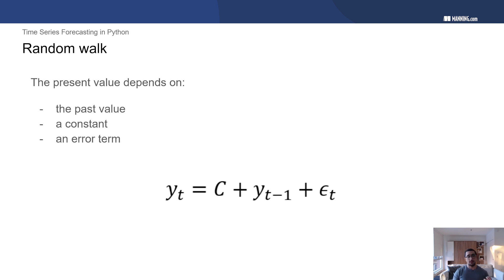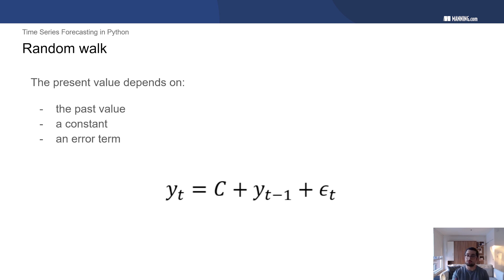Mathematically, we say that in a random walk, the present value y_t depends on a constant c, the past value of the time series y_{t-1} — just the value one step before — and an error term epsilon_t. This is the mathematical expression of a random walk. We can already see why we cannot reasonably forecast it: the future value y_t is only dependent on the present value plus some random number, and we cannot reasonably forecast a random number.